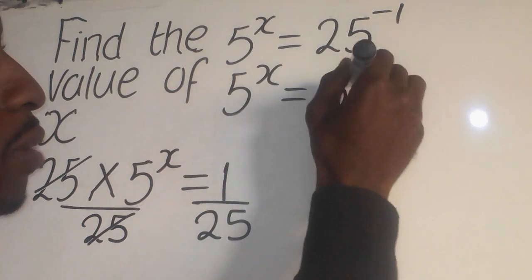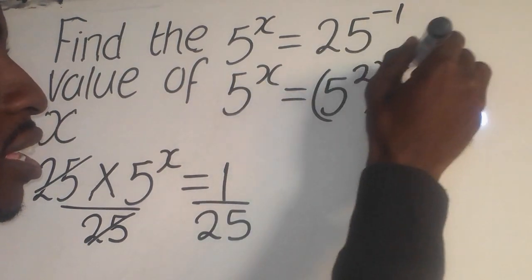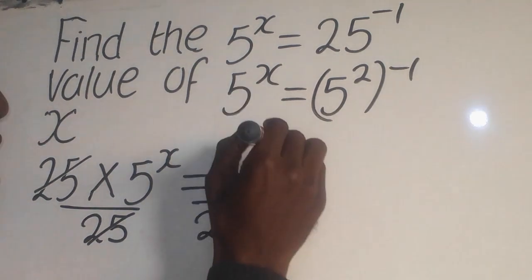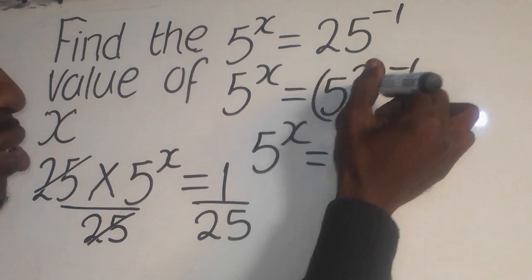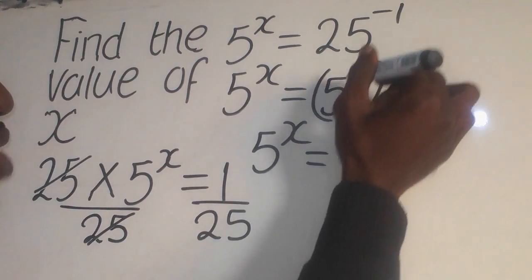Now you change this, 25 to the lowest form of a base. So it will be 5 to the power 2, like this here. So this one again will come down the way it is like this. This 5 to the power 2 simply means 5 times 5, which is 25.